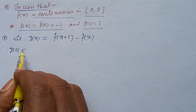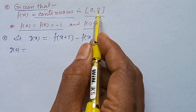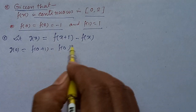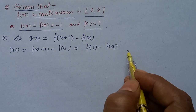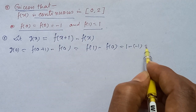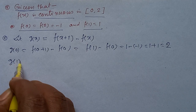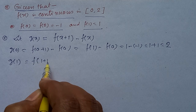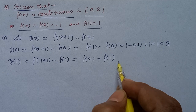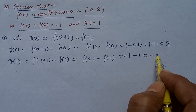g(0) = f(0+1) - f(0) = f(1) - f(0) = 1 - (-1) = 1 + 1 = 2. And g(1) = f(1+1) - f(1) = f(2) - f(1) = -1 - 1 = -2.